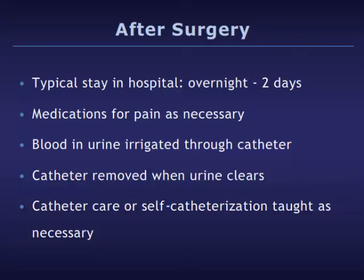Bladder irrigation is continued until the drainage is felt to be clear enough to stop. The catheter is then left to straight drainage, and if the urine remains clear, the catheter is removed entirely — usually the day after surgery. Occasionally, some patients are sent home with their catheter in place, and your doctor or nurse will teach you how to care for it. In other cases, patients are taught to catheterize themselves intermittently to empty the bladder.